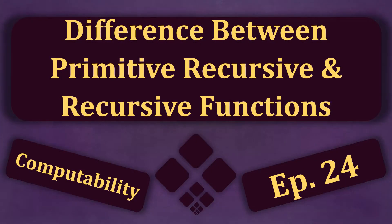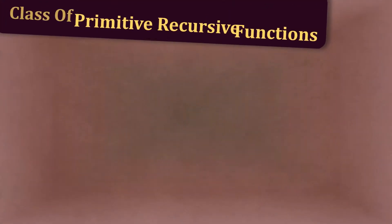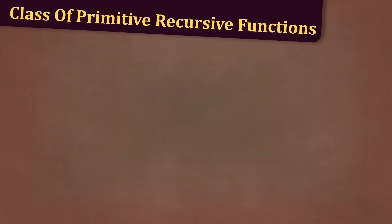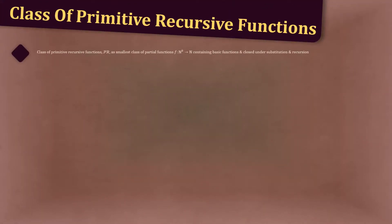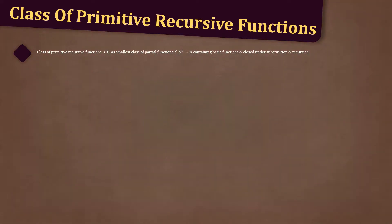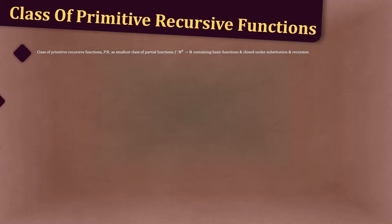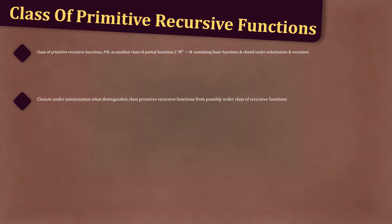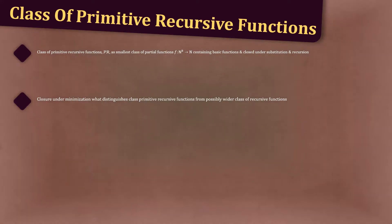Hello everyone, let's discuss the differences between primitive recursive and recursive functions. Let's recall the class of primitive recursive functions. We define the class of primitive recursive functions, which we will denote PR, as the smallest class of partial functions f from the natural numbers to the k to the natural numbers containing the basic functions and closed under substitution and recursion. Closure under minimization is what distinguishes the class of primitive recursive functions from the possibly wider class of just recursive functions.